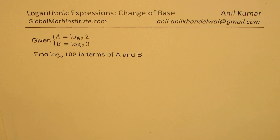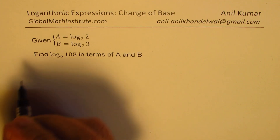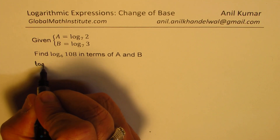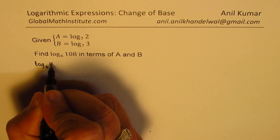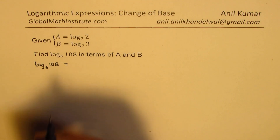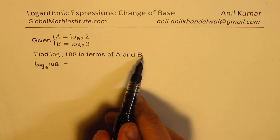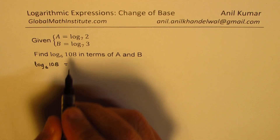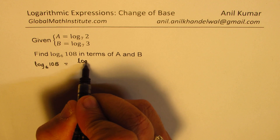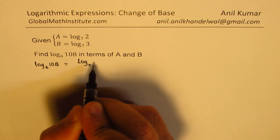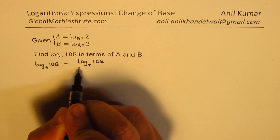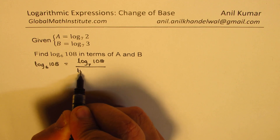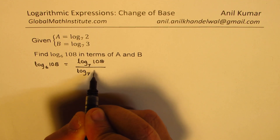You can always pause the video, answer the question, and then look into my suggestions. We need to find log base 6 of 108 in terms of a and b, which means we should change the base to 7. So let's apply the change of base formula — log base 7 of 108 over log base 7 of 6.